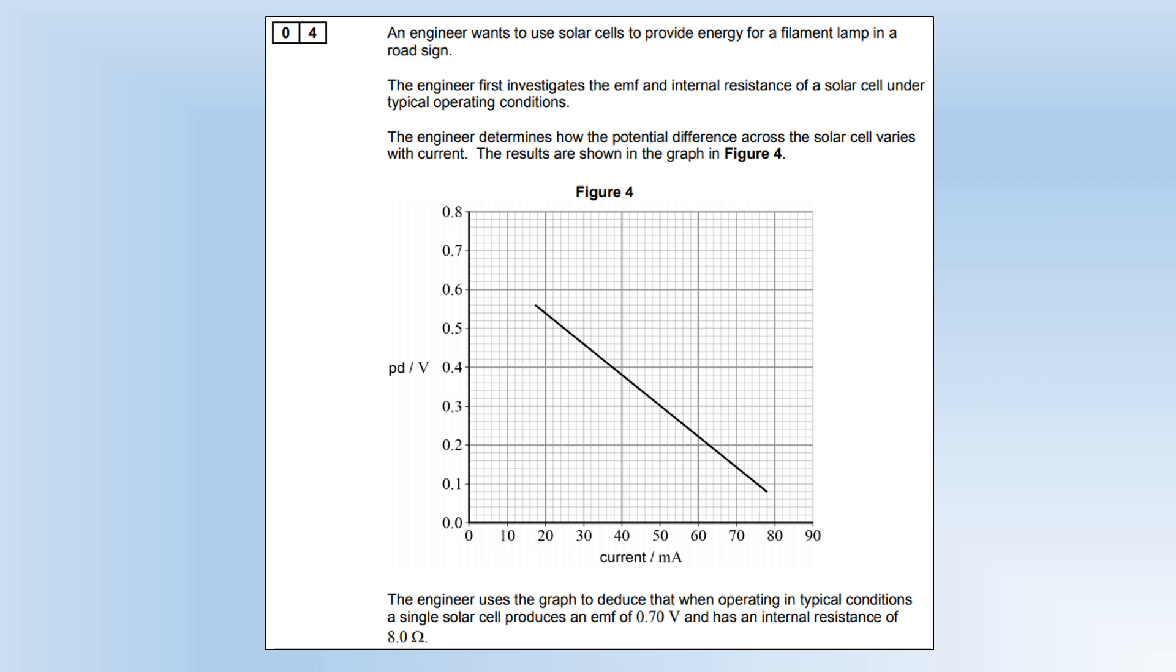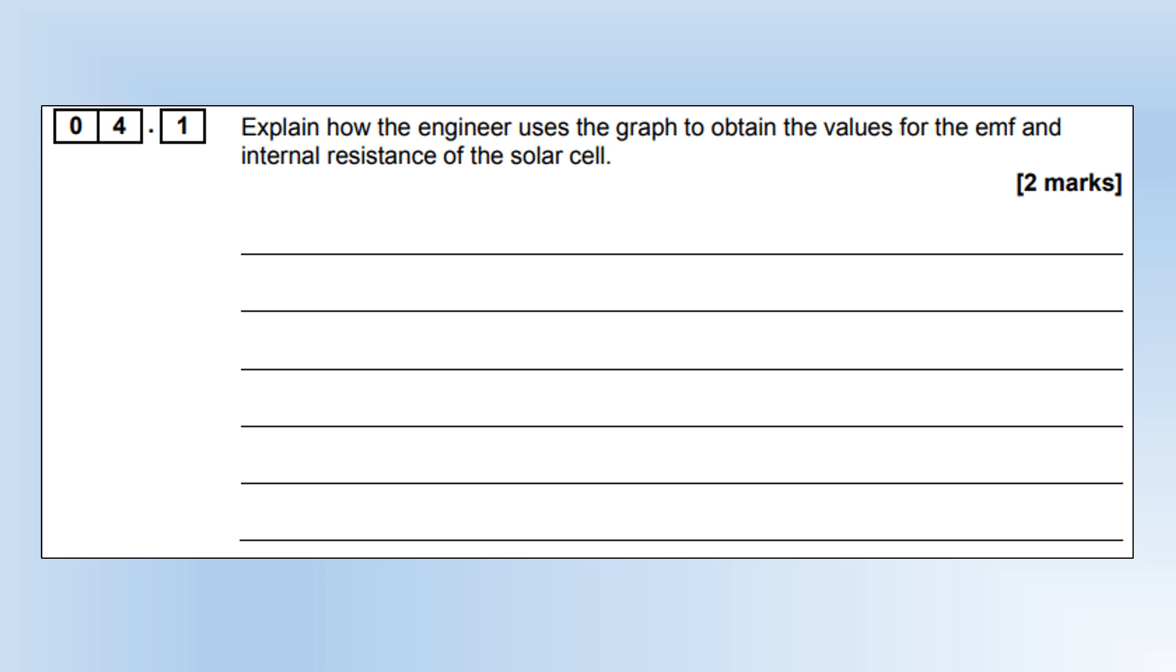Question 4: an engineer wants to use solar cells to provide energy for a filament lamp in a road sign. The engineer first investigates the EMF and internal resistance of a solar cell under typical operating conditions. The engineer determines how the potential difference across the solar cell varies with current. The engineer uses the graph to deduce that when operating in typical conditions, a single solar cell produces an EMF of 0.7 volts and an internal resistance of 8 ohms. Explain how the engineer uses the graph to get the values for EMF and internal resistance. EMF is the y-intercept; the internal resistance is the gradient times minus one.